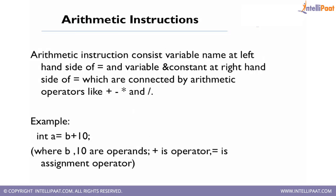Arithmetic instructions consist of a variable name on the left-hand side of the equal sign, and variables and constants on the right-hand side connected by arithmetic operators like plus, minus, multiplication, and division. Always put the variable part on the left side; if you put a constant on the left side and a non-constant on the right side, you will get an l-value error.